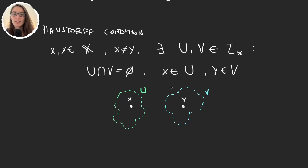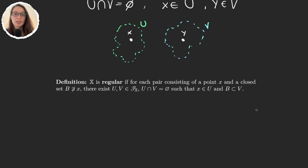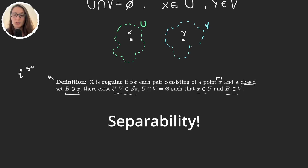Now let's see how we can make this definition a bit stronger and have different axioms. The second separability axiom is being regular. We say that a space is regular if it separates points from closed sets. That is, if we have a point X and a closed set B that doesn't contain X, there exist two open sets — neighbourhoods of X and B — that are disjoint. So if a space satisfies this condition for any X and any closed set B, then we say that space is regular.